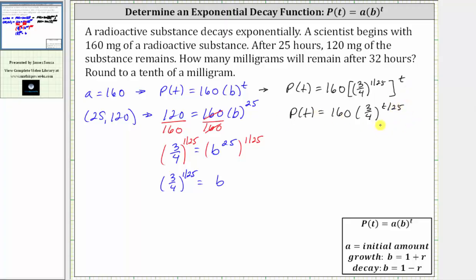Now that we have the exponential decay function, we can determine how much remains after 32 hours by determining P(32). P(32) is equal to 160 times 3 fourths raised to the power of 32 divided by 25.